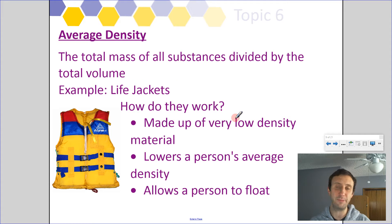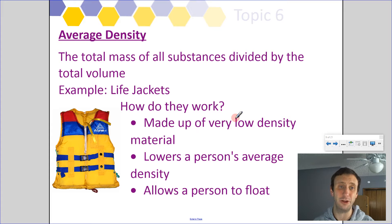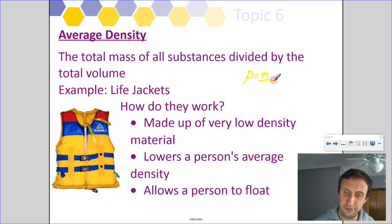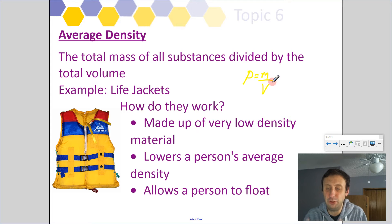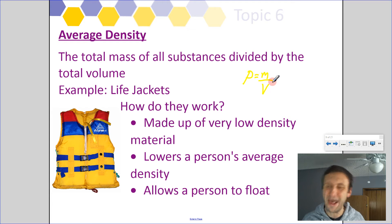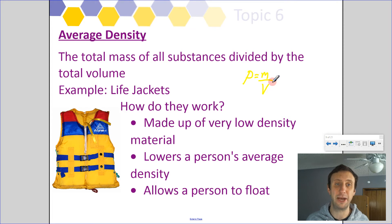When considering whether something will float or sink, we look at the average density of the whole object — the total mass of all substances divided by the total volume gives us that average density. Think about a life jacket: when somebody puts one on, they're using something with very low density to lower their average density. The life jacket has volume but very little mass, so it causes the average density of that person to go down, making them less dense than water, which allows the person to float.